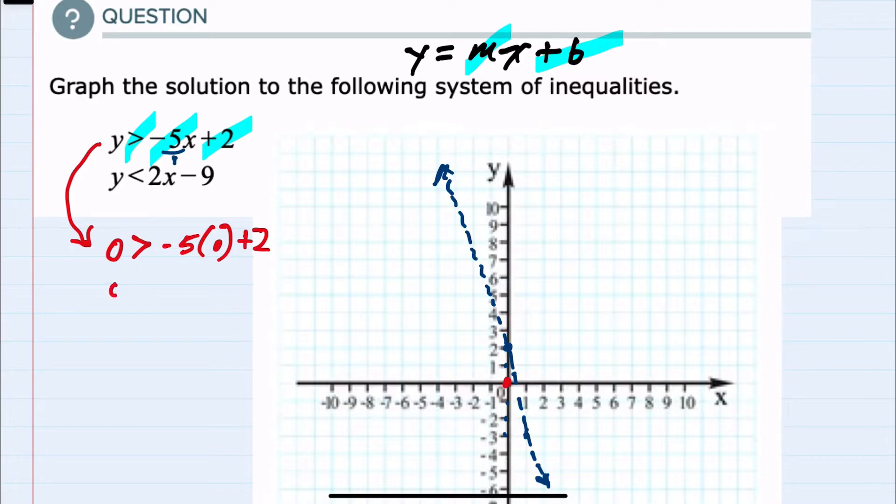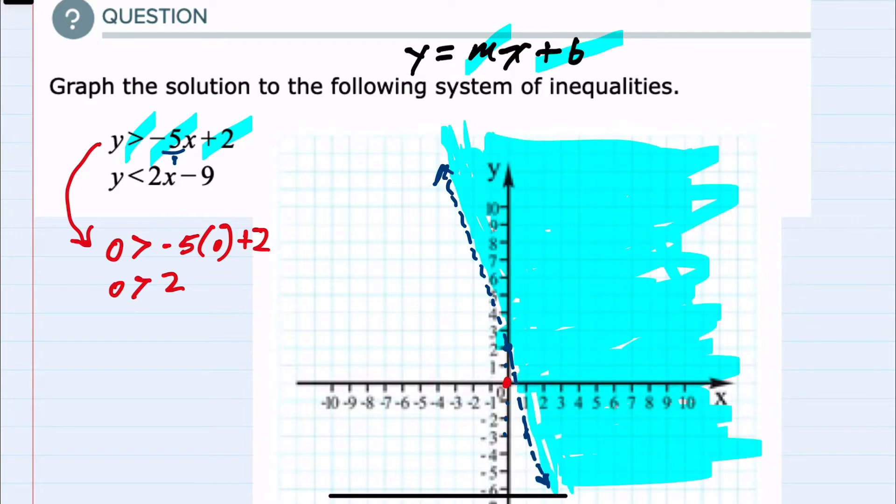On the right-hand side, we could simplify: negative 5 times 0 is 0 plus 2 would mean 2, so we have 0 > 2. And here our test point did not work. 0 is not greater than 2. So I would shade on the opposite side of the line away from our test point. So for this line, that's everything to the right-hand side.